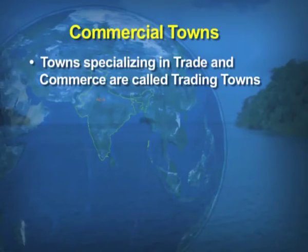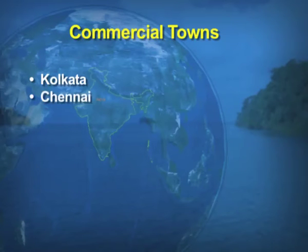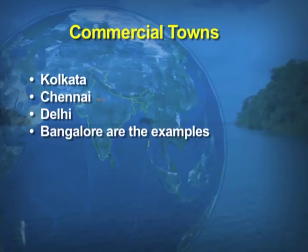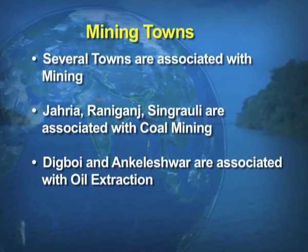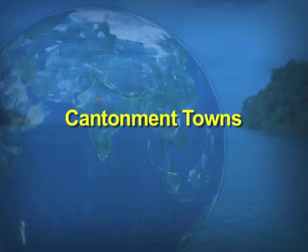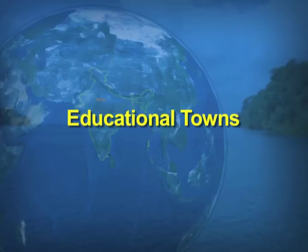Commercial towns specialize in trade and commerce, and some are generally engaged in agricultural products. Kolkata, Chennai, and Delhi are such examples. Mining towns are where mining activity is the main function — for example, Digboi or Jharia. Cantonment towns are basically known for defense facilities — for example, Meerut Cantonment and Ambala Cantonment.